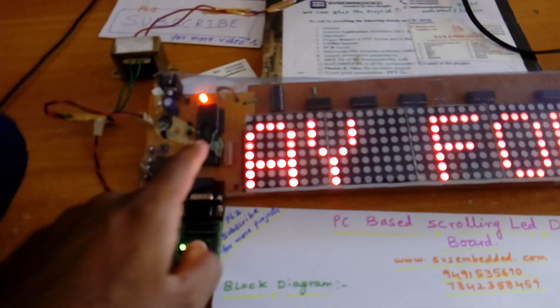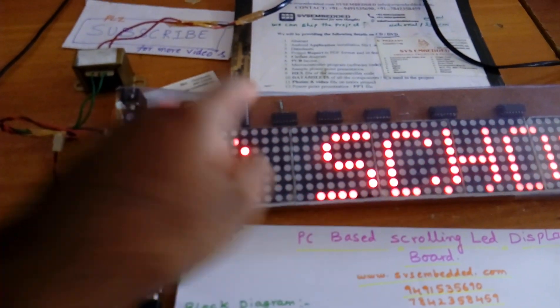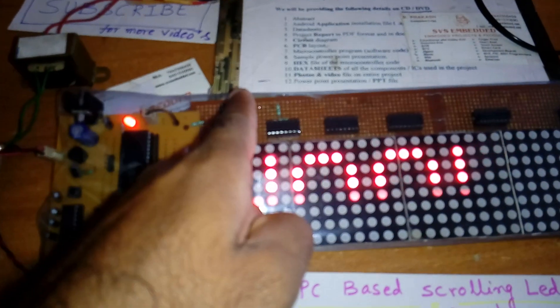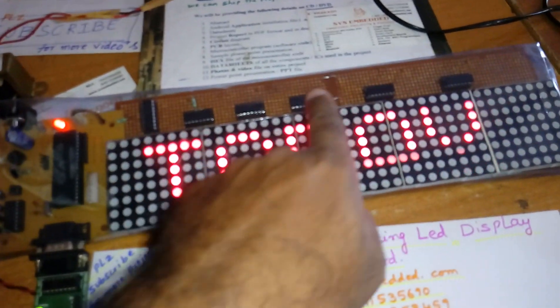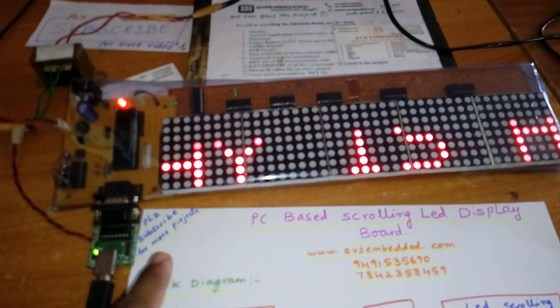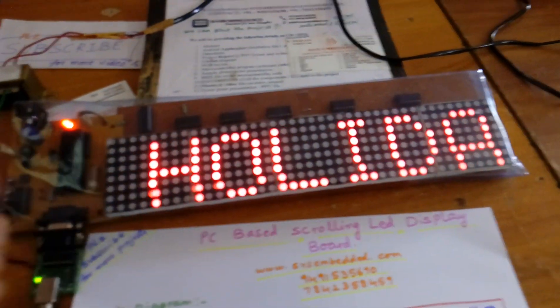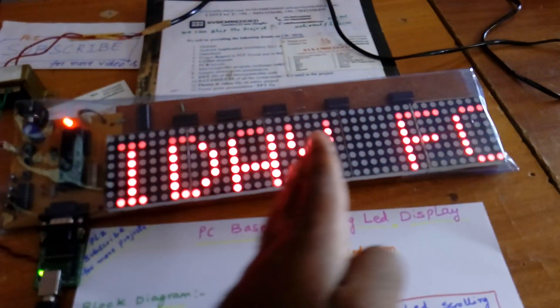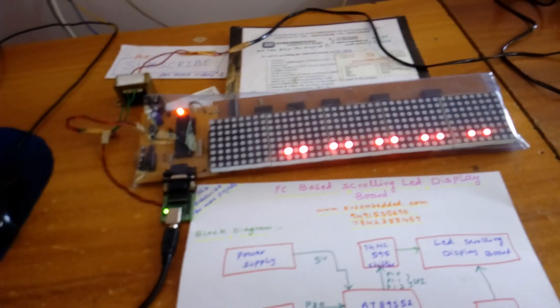The microcontroller board is connected to the ULN2803 line driver, and the data board is connected to port 1 pins (P1.0, P1.1, P1.2) — the shifters shift the characters. The data scrolls continuously in a while(1) loop. To stop, you need to send any character, and the scrolling will stop.